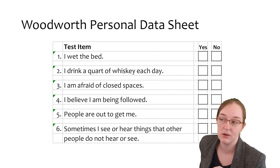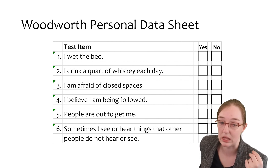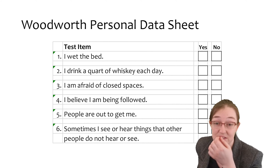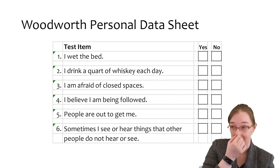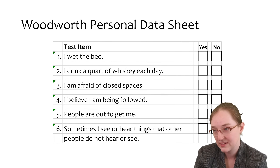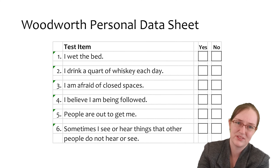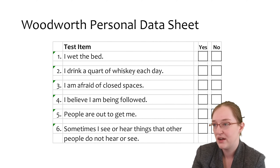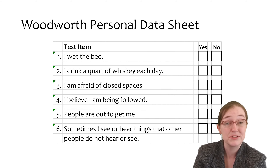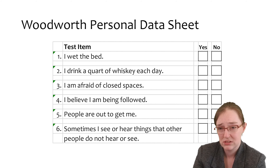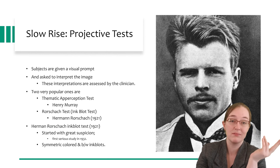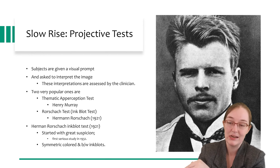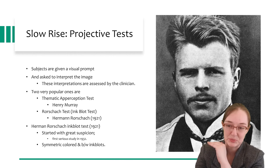Modern personality testing began with Woodworth's Personal Data Sheet. It was an attempt at an instrument for detecting which army recruits were susceptible to psychoneurosis, also known as shell shock. This test, first published in 1919, consisted of 116 questions that the subject could answer by underlining yes or no. The questions were exclusively of the 'face obvious' variety and for the most part involved fairly serious symptomology — though face validity is not validity. It was designed to screen out soldiers predisposed to shell shock.